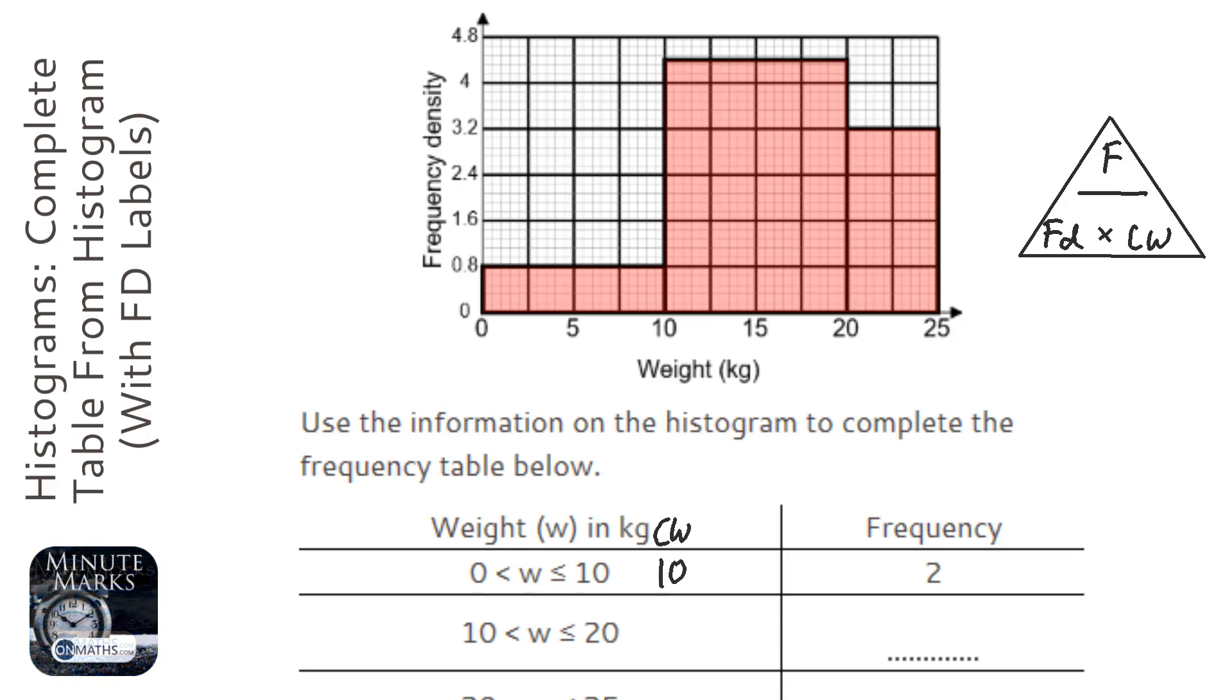The frequency density is 0.8. So 10 times 0.8 - well, that doesn't quite work, that gives me 8. So I've got to divide it by 4 to work out the frequency.